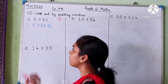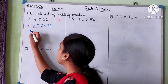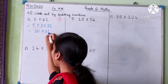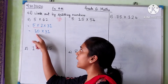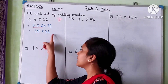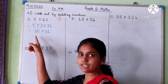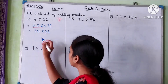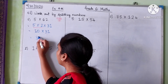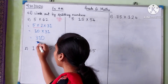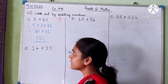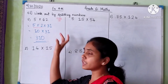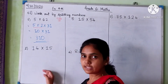Now 5 multiplied by 2 is equal to 10. So I write 10 and keep 31 as it is. Now we have 10 multiplied by 31. Multiplying 31 by 10 is very easy — you just add a 0 in front of 31. So this becomes 310. By splitting the numbers our calculations have become very easy.